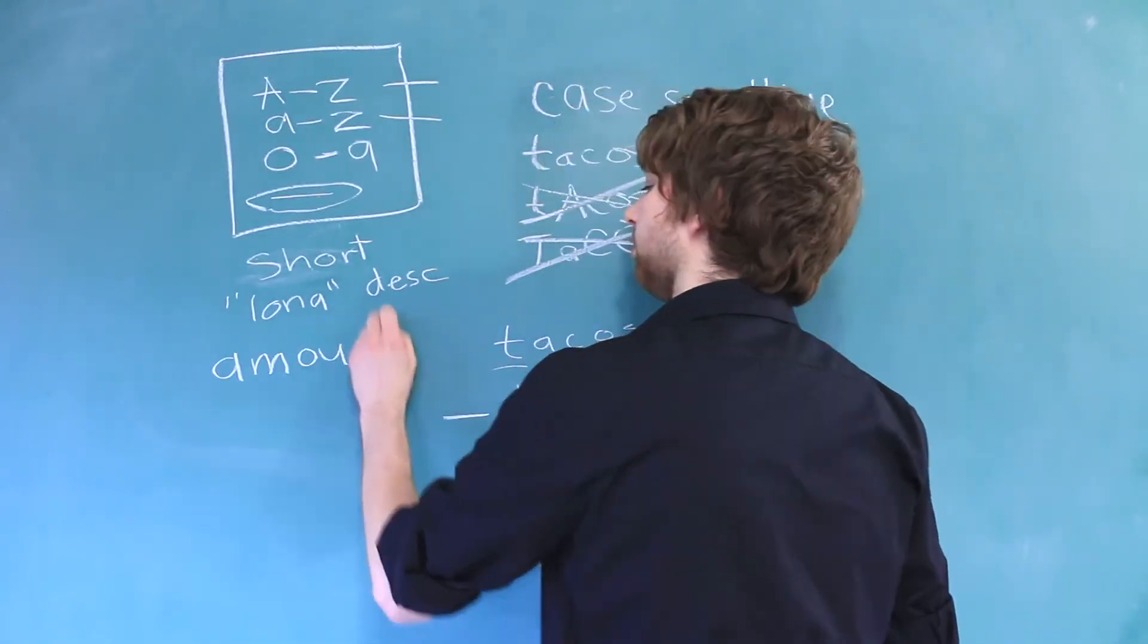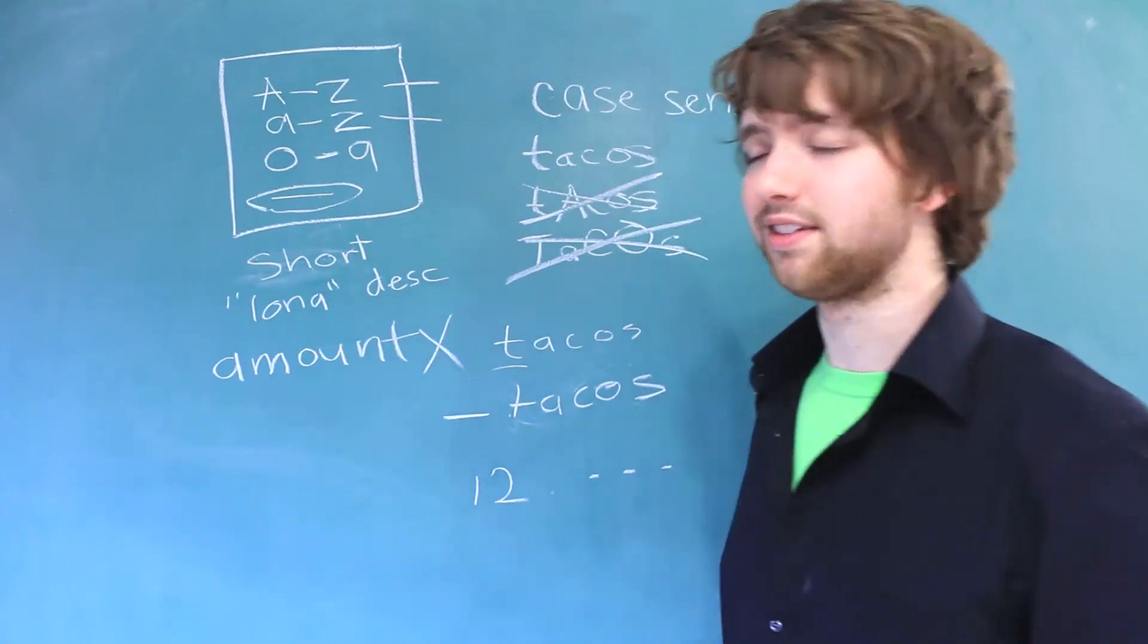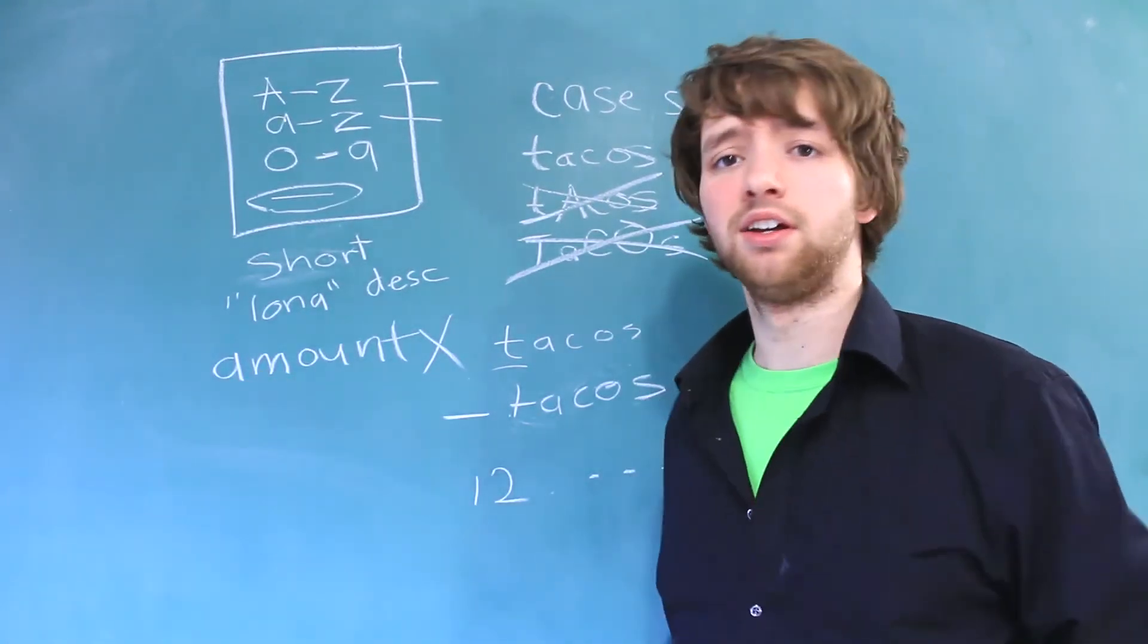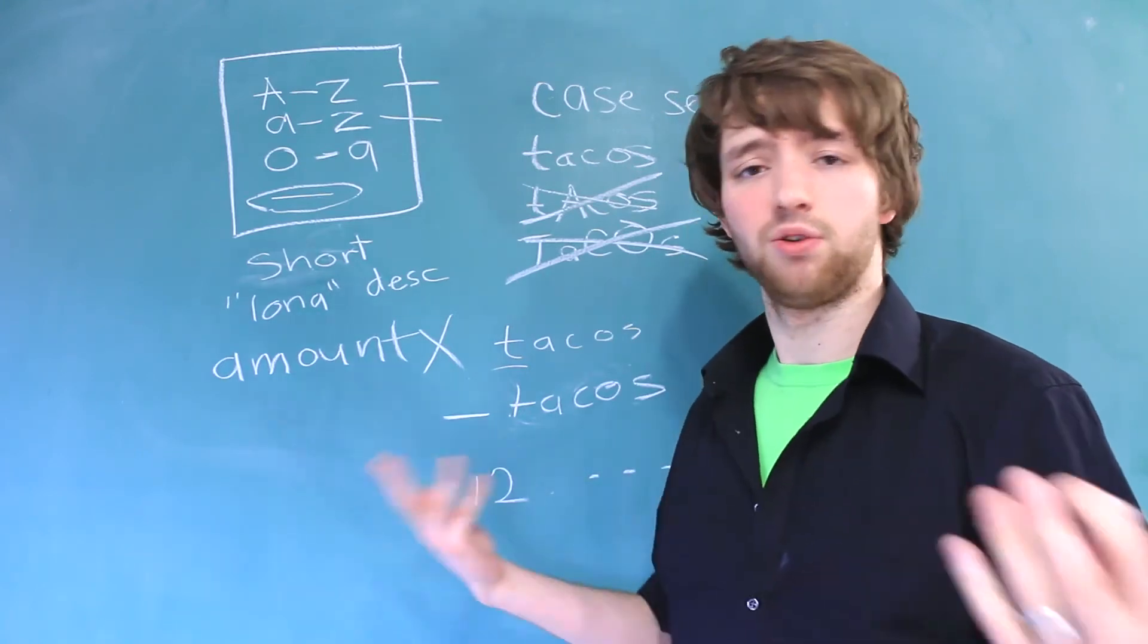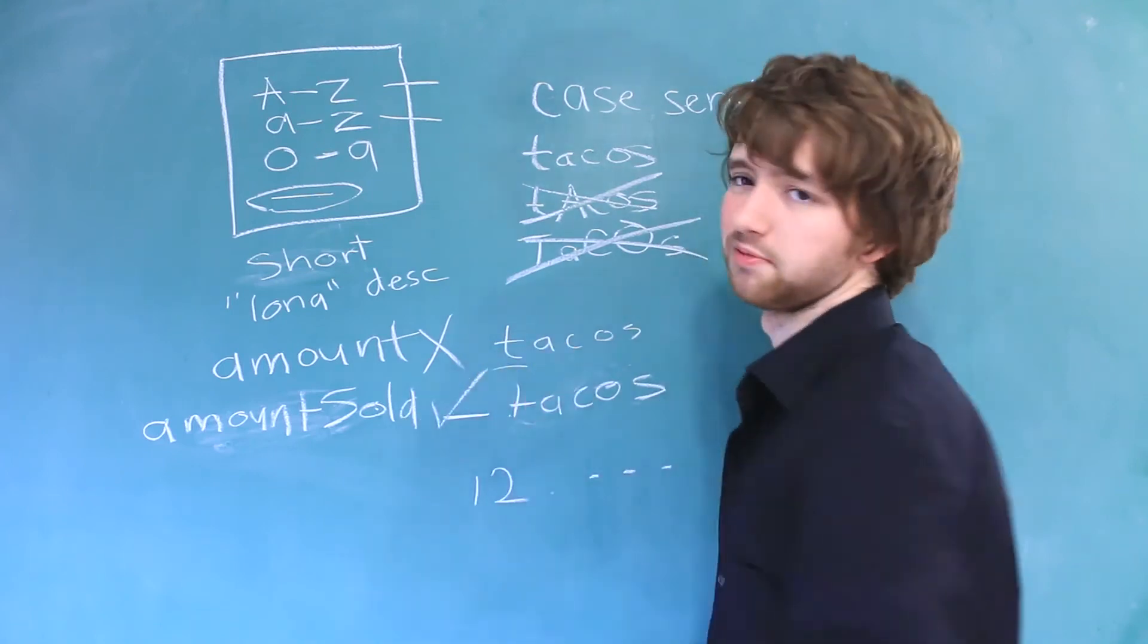The first one, amount. I would say bad. It doesn't say what the amount is of. Amount of cookies, amount of doughnuts, amount of, I don't know. Amount sold. That's a little better. I would say that's probably okay.